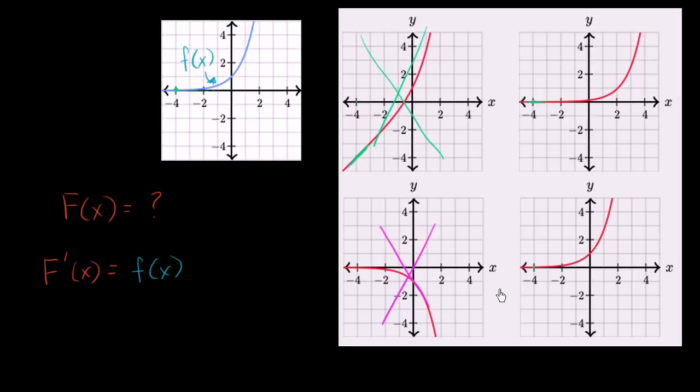And over here, the slope of the tangent line, when x is equal to negative four, that also looks pretty close to zero. So these are still both in the running.